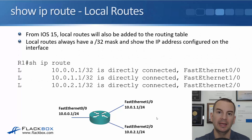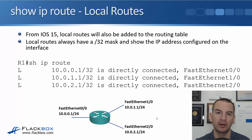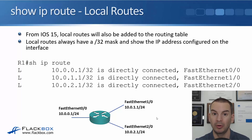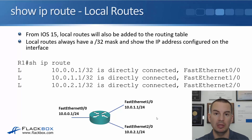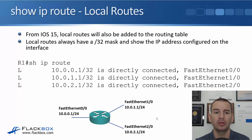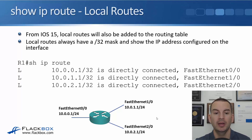From IOS 15, the 'show IP route' command tells you both the subnets available on each interface and the actual IP address configured on the interface, making it more convenient for the administrator. In our example, after configuring the IP addresses, we see both the connected routes and the local routes in the same output. We'll see 10.0.0.1/32 on FastEthernet 0/0, 10.0.1.1/32 on FastEthernet 1/0, and 10.0.2.1/32 on FastEthernet 2/0. Local routes always show up as /32, regardless of what subnet was actually configured on the interface.